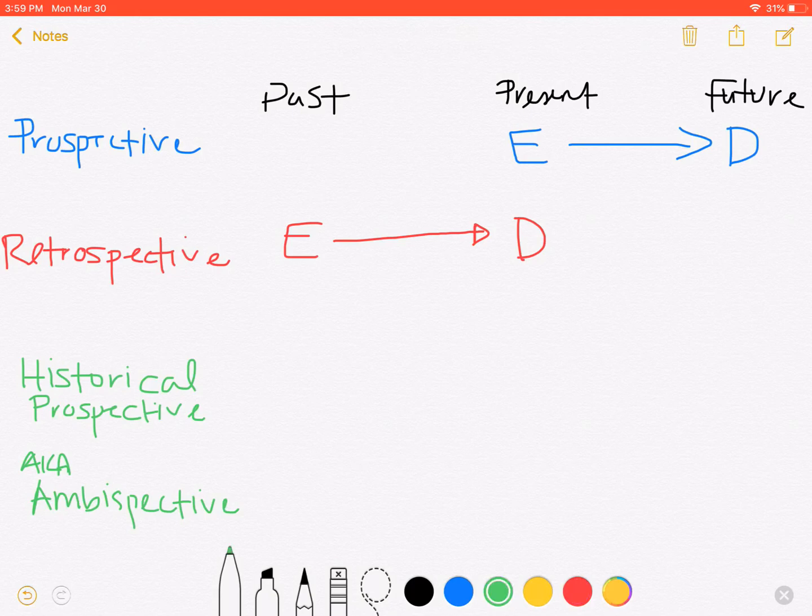The final one of these, the historical perspective, also known as the ambispective, looks both backwards and forwards to understand the situation. In historical perspective studies, what we do is we go find data about the exposure in the past.